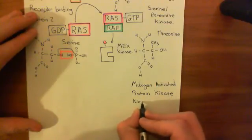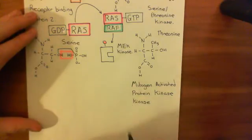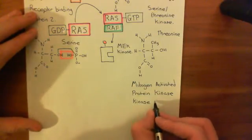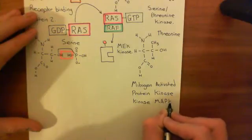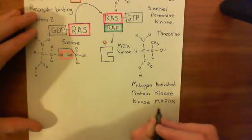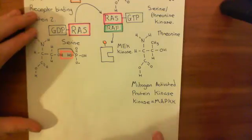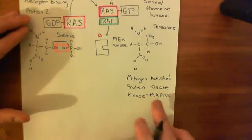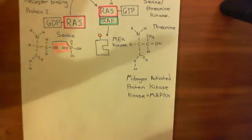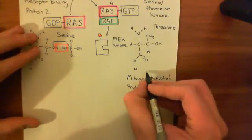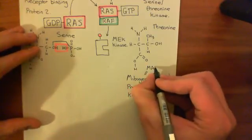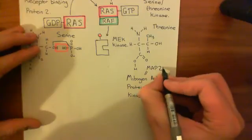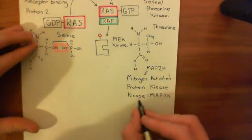You will often see people take the initials of this name: M for mitogen, A for activated, P for protein, and KK for kinase kinase — so people refer to this as MAPKK, or MAP kinase kinase. Another name you may see is MAP2K — MAP for mitogen-activated protein, and 2K to denote the two kinases.